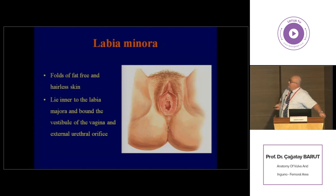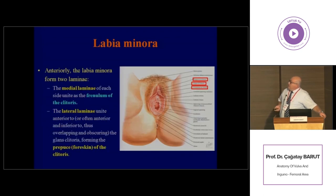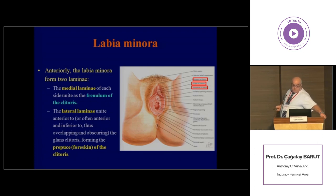In between the two labia majora there are a pair of folds known as labia minora. They are fat-free structures formed mainly by hairless skin. They bound the vestibule of the vagina and the external orifice of the urethra. The labia minora form two laminae at the anterior part: the medial lamina of each side unites to form the frenulum of the clitoris, and the lateral lamina unite to form the prepuce of the clitoris, which are in close relation with the glans of the clitoris.